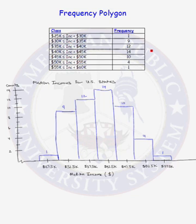In a frequency polygon, however, we do not have the bars like we do in a histogram. So we are going to change our histogram to a frequency polygon. Instead of graphing a bar over our first class, we put a dot corresponding to a frequency of 1 from our first class at the midpoint of our class.